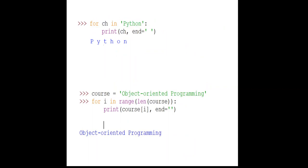Let's say we have a string called 'Python'. This string could be a literal string — we define it directly without necessarily assigning it to a name. If we have a direct literal string in a for loop, we loop from the beginning to the end and display each character with a space after it, so characters appear separated by spaces.